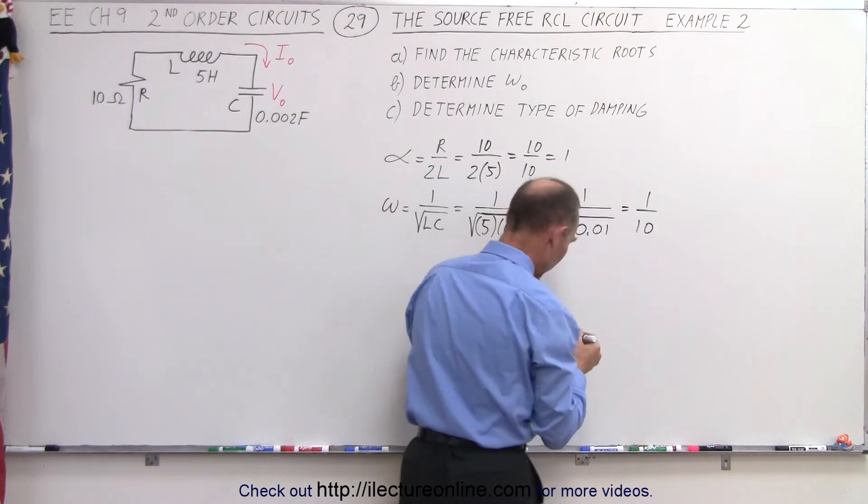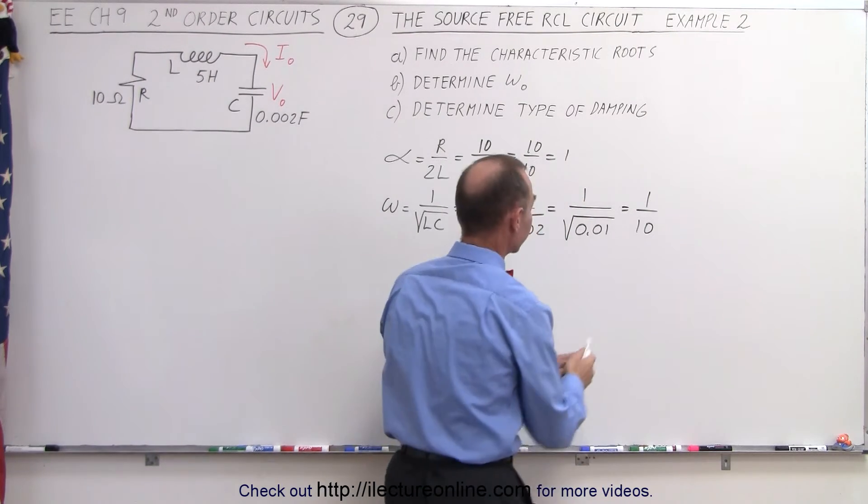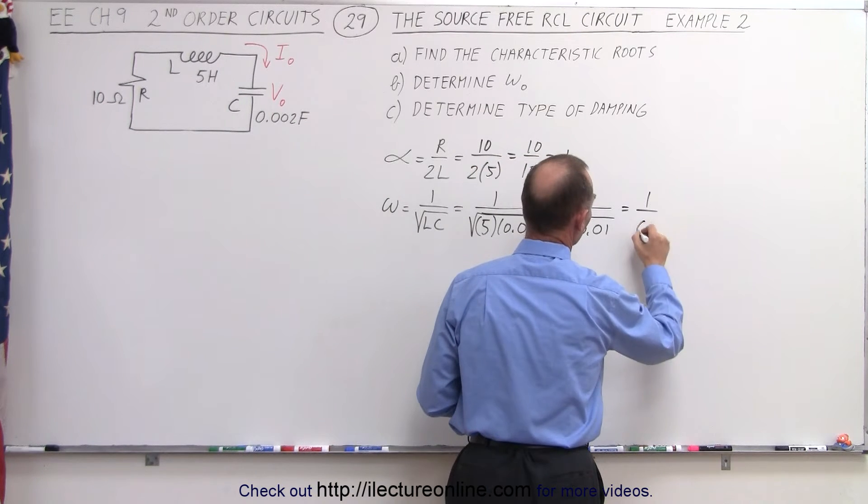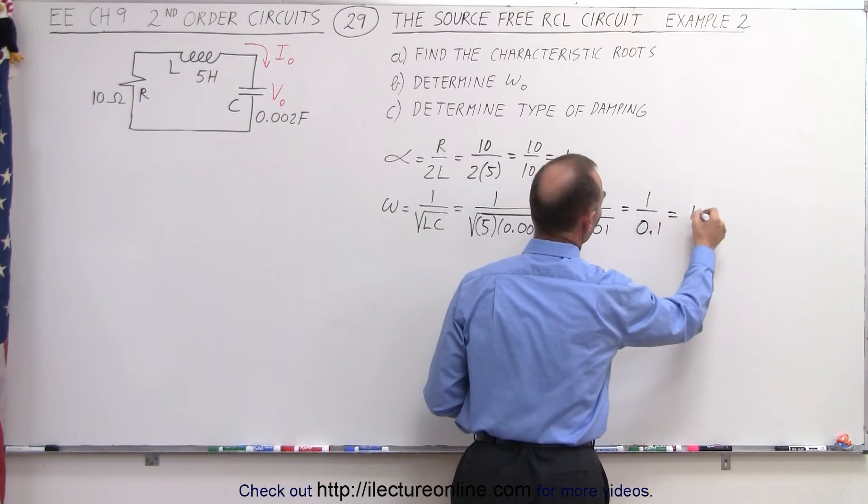Let's see here, no, not 1 over 10, it's equal to 1 over 0.1, which is equal to 10. Again, there we go.